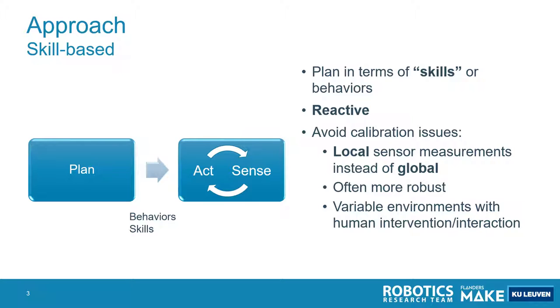In this way we can avoid many of the calibration issues because for these skills we have typically local sensor measurements instead of global absolute positioning. This makes it more robust. It's also very quick and reactive such that we can deal with variable environments where there is human intervention or interaction.